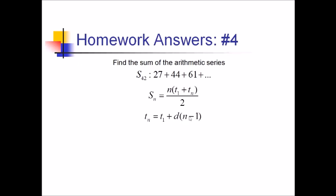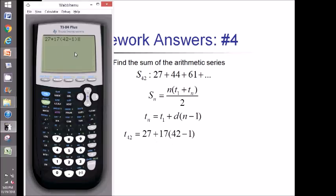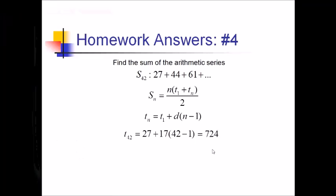T1 plus D times n minus 1, to find the 42nd term. T42 is going to be our first term, 27, plus the common difference, which is 44 minus 27, that's 17, times 42 minus 1. I have no idea what that's going to be, so let me use the calculator. I end up with 724.